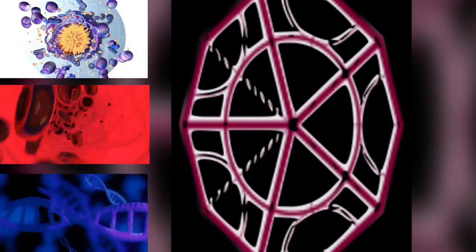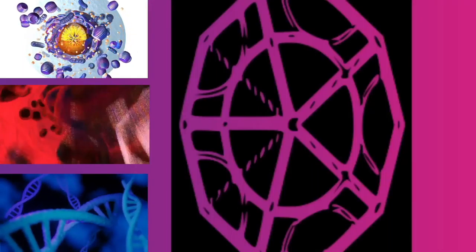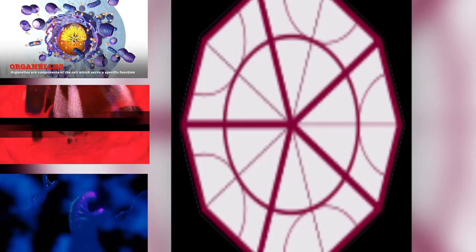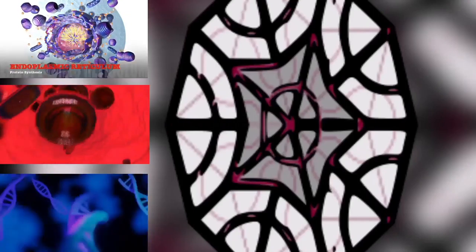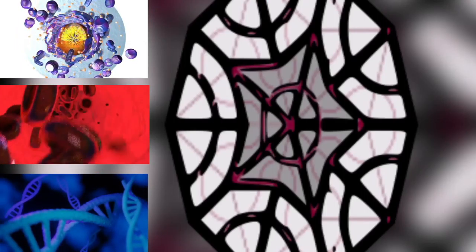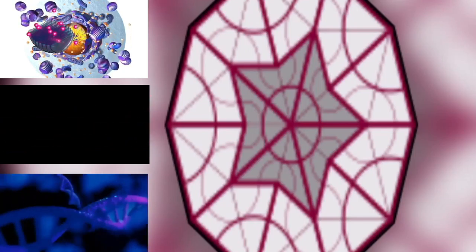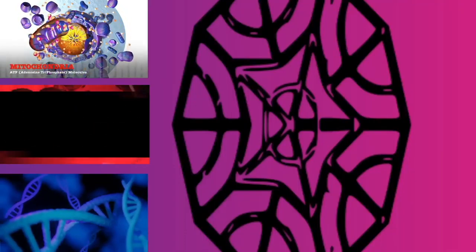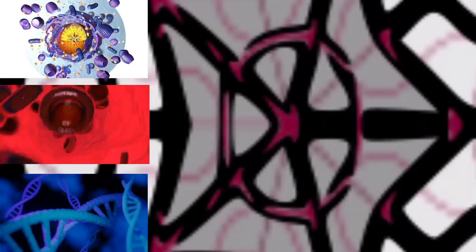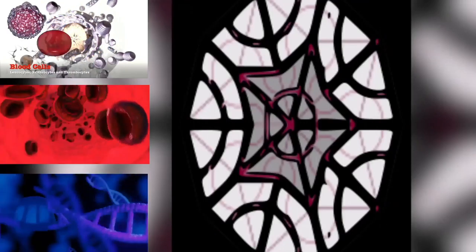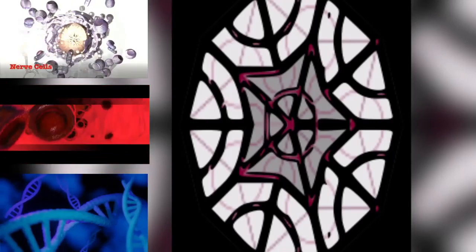The oldest known fossilized prokaryotes were laid down approximately 3.5 billion years ago, only about 1 billion years after the formation of the Earth's crust. Eukaryotes only appear in the fossil record later and may have formed from the endosymbiosis of multiple prokaryote ancestors. The oldest known fossil eukaryotes are about 1.7 billion years old. However, some genetic evidence suggests eukaryotes appeared as early as 3 billion years ago.